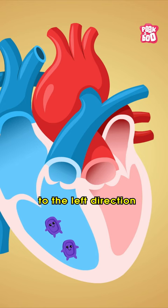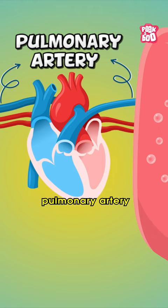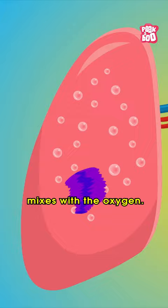to the left direction through the pulmonary valve and then through the pulmonary artery directly into the lungs. That's where the blood mixes with the oxygen.